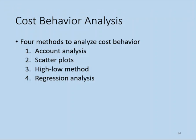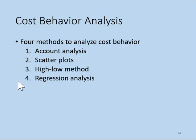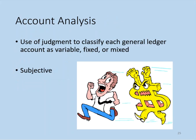Now that we've reviewed the different types of costs, it's appropriate to look at how we can actually analyze cost behavior. We have four commonly used methods: account analysis, scatter plots, the high-low method, and regression analysis. These go from least to most accurate. Under account analysis, managers use their judgment to classify each general ledger account as either variable, fixed, or mixed — making it quite subjective.